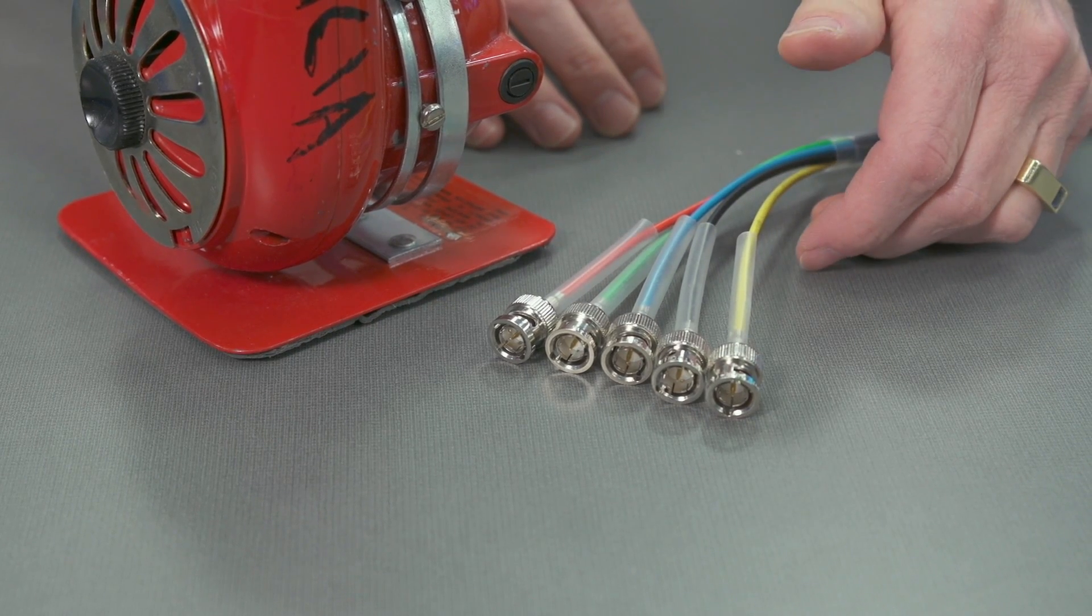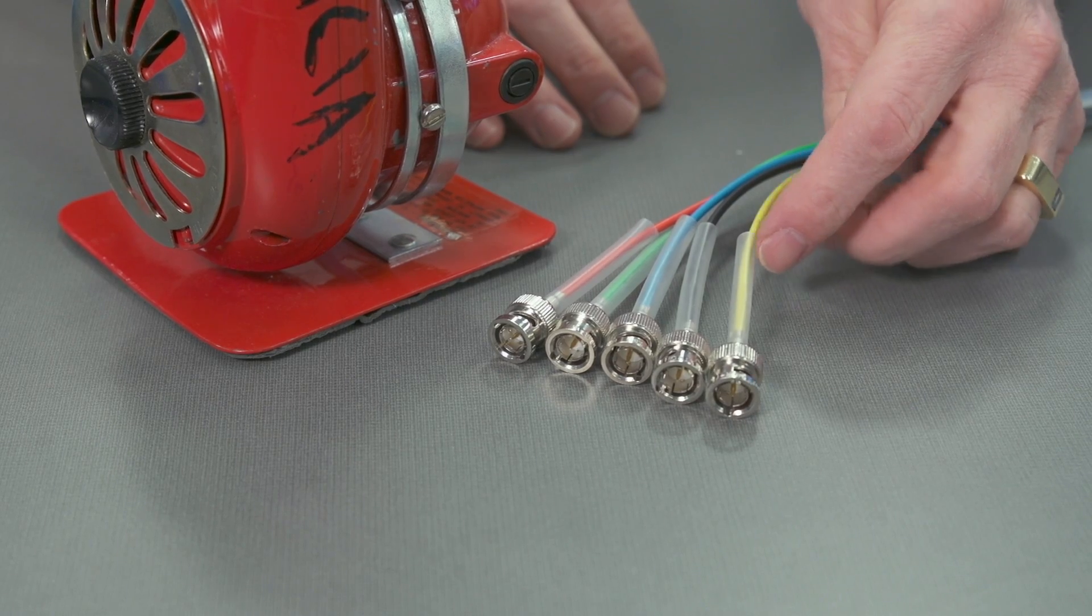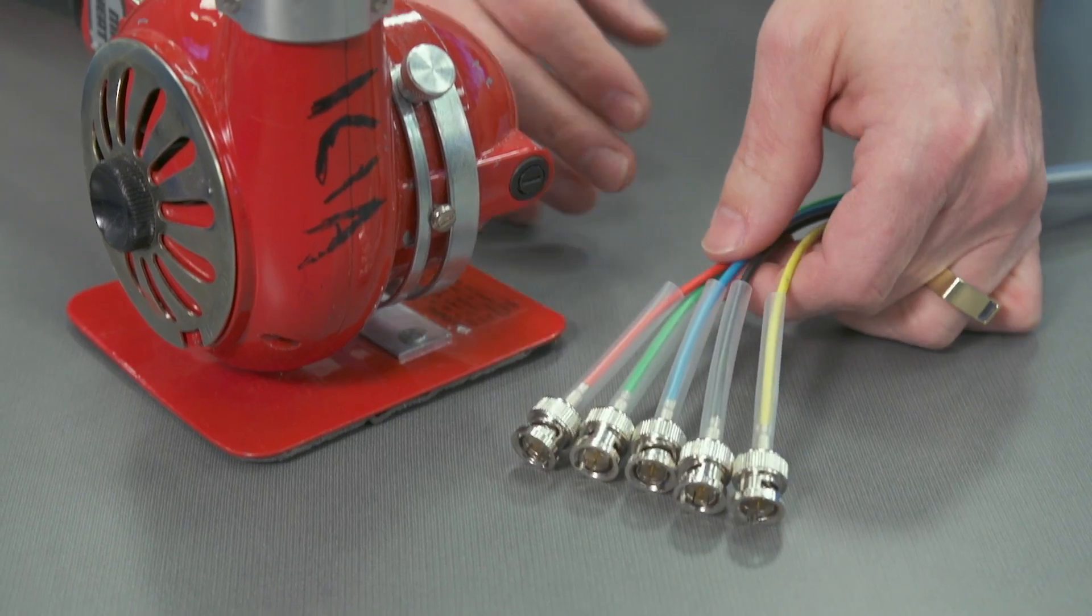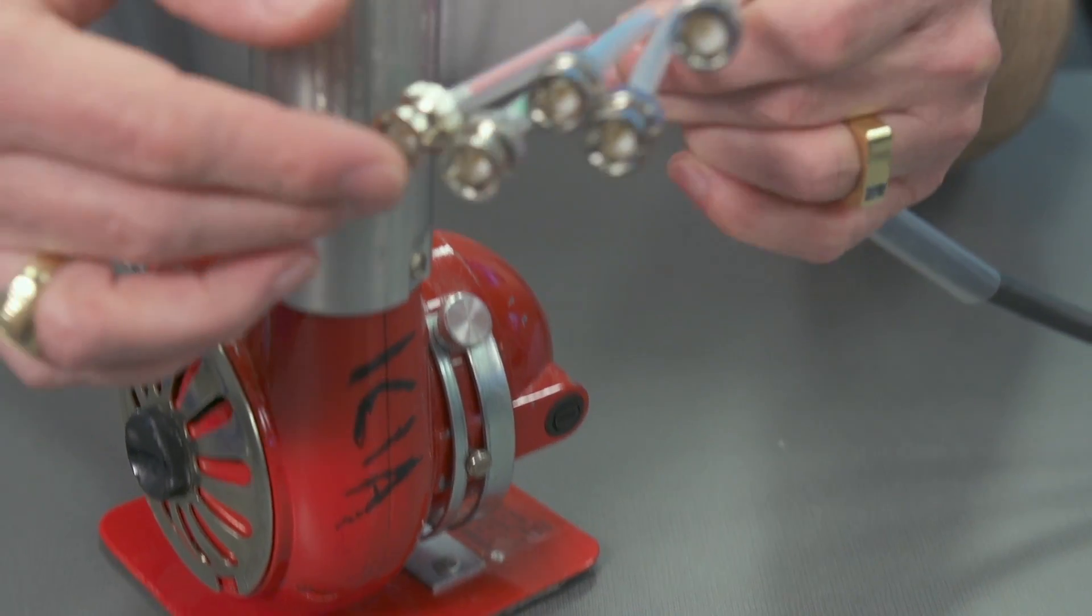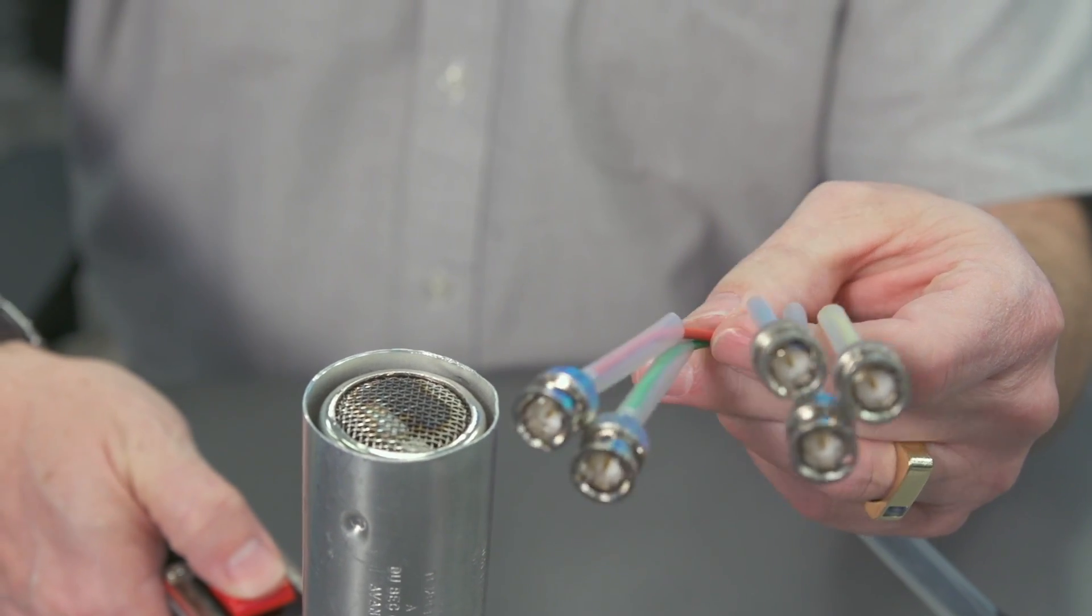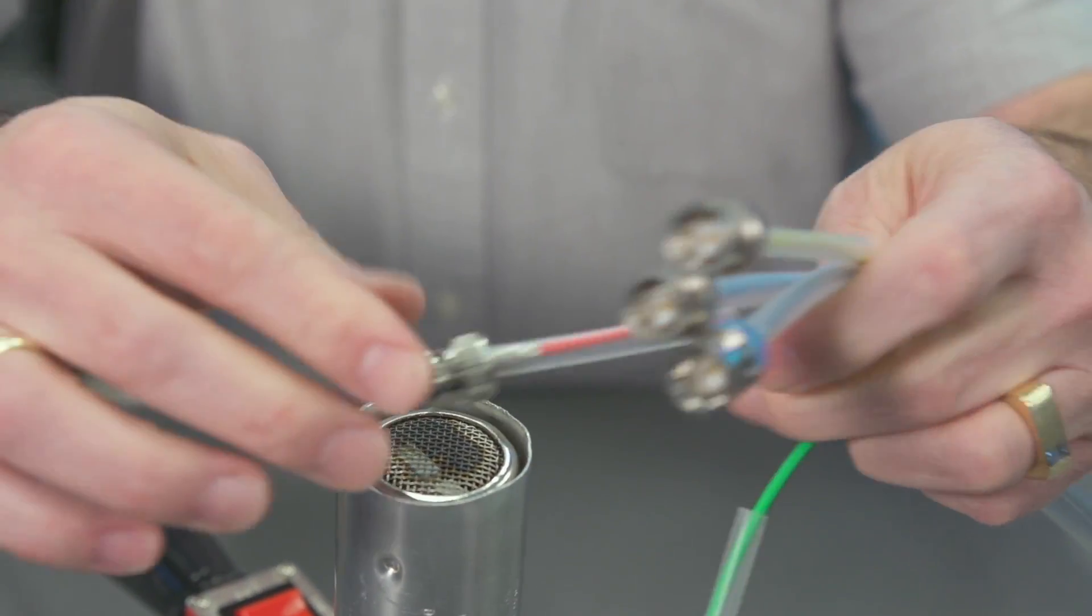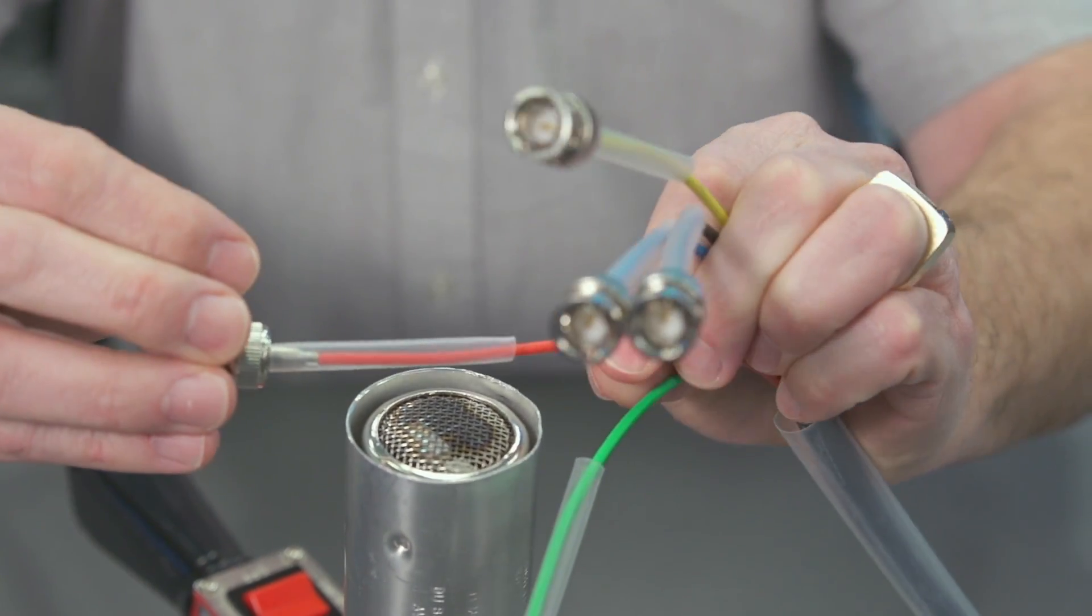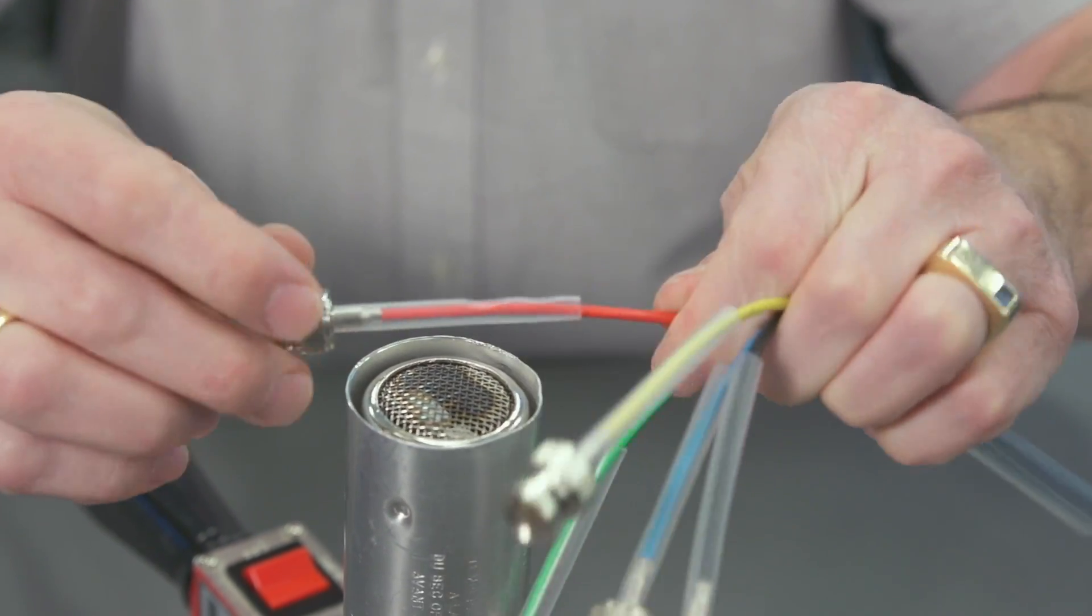Now that we have all five connectors on, we need to put the heat shrink and shrink it down to give us some support on these cables. Now ordinarily, this heat shrink would be maybe red, green, blue, black, and yellow. But in our case, we're using clear so you can see what we're doing. So what we want to do is heat shrink these, and we want to rotate this as we go so we can get a nice, even melt.